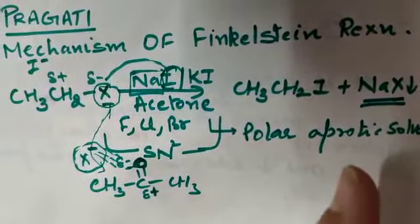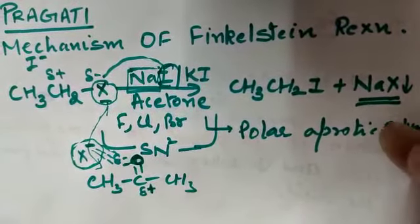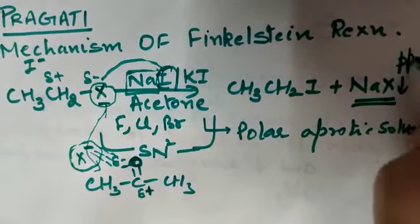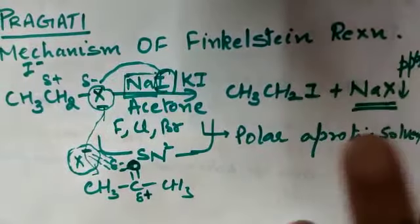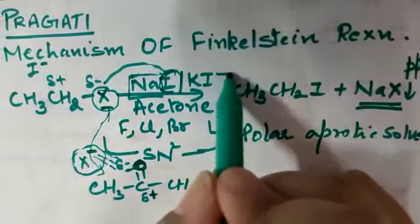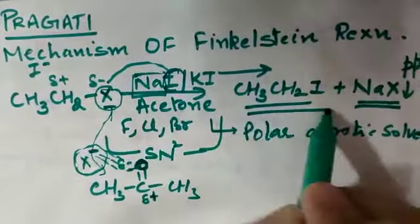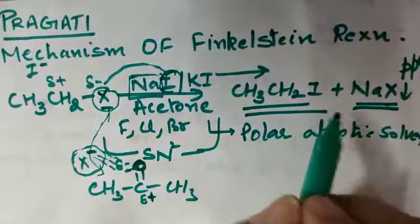Now this NaX is not soluble. Its solubility ki wajah se, this is less soluble jiske wajah se, iske precipitates ban jate hain. Jisko hum continuously remove karte rehenge. Aur Le Chatelier's principle ke hisaab se, reaction will go in forward direction. And finally we will get alkyl iodide.